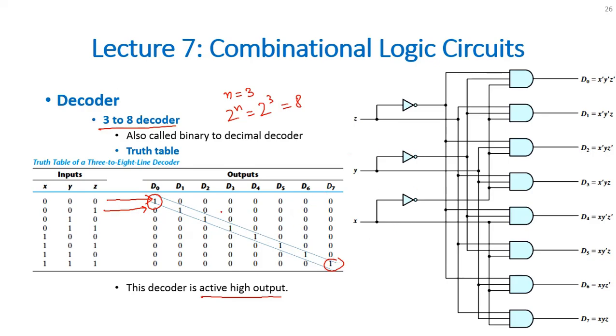To implement all these SOP expressions into a circuit form we can get that D0 will be equal to X dash, Y dash, Z dash. So, you have three inputs X, Y and Z and you need to get the X dash, Y dash and Z dash.